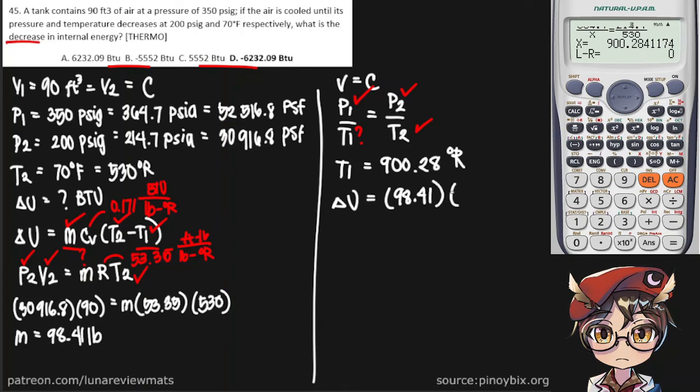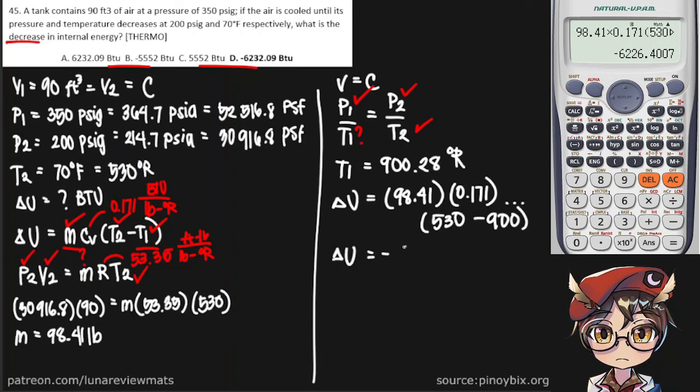98.41. Cv is 0.171 times—okay, this is 530 minus 900. Don't mix these two up or else you're going to get a different answer. 0.171 times 530 minus 900. And there it is. Negative 6226 BTU. That is our final answer. And the closest one in the choices would be letter D.